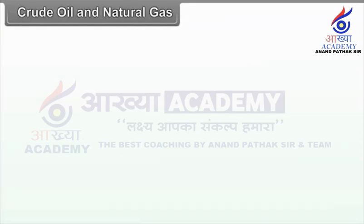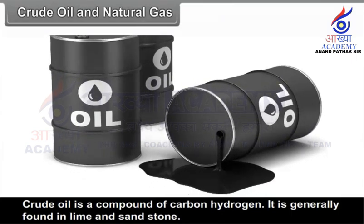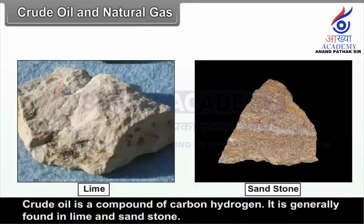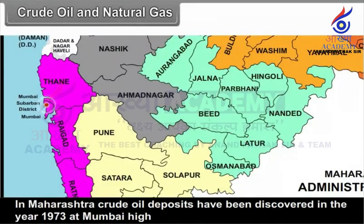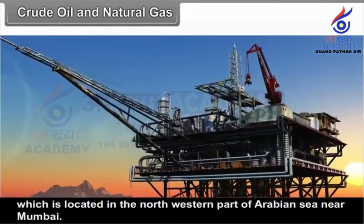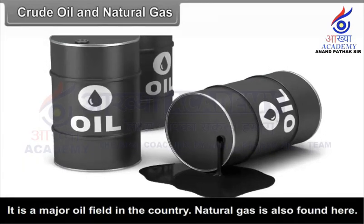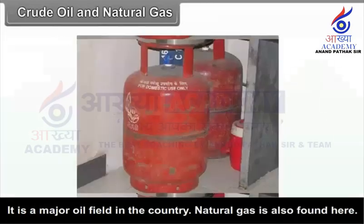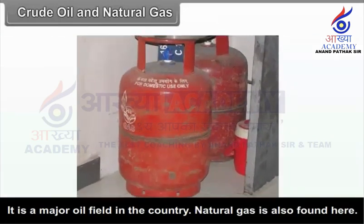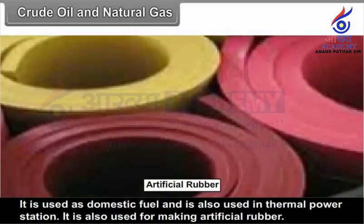Crude Oil and Natural Gas. Crude oil is a compound of carbon and hydrogen and is generally found in limestone and sandstone. In Maharashtra, crude oil deposits were discovered in 1973 at Mumbai High, located in the northwestern part of the Arabian Sea near Mumbai. It is a major oil field in the country. Natural gas is also found here and is used as domestic fuel, in thermal power stations, and for making artificial rubber.